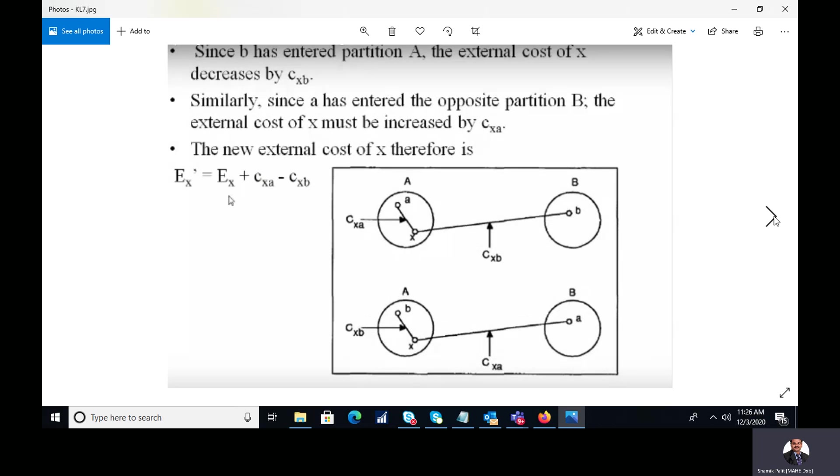Same manner if you start considering the external cost. So we can say that the external cost is going to be affected in the following manner: Ex' equal to Ex plus Cxa minus Cxb. Applying the same logic over here, while you start interchanging the position of A and B, ultimately xA will increase and xB will decrease.